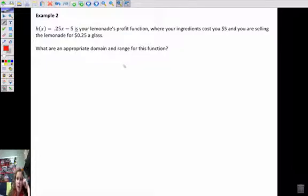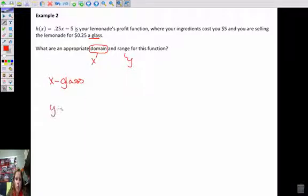Example number two, h of x equals 0.25x minus 5 is your lemonade profits function. So we're taking, I'm assuming where h of x is your profit, and then x is going to be each glass. You make 25 cents per glass, you have a $5 cost for a startup. What is an appropriate domain and range? So domain is the x values, and range is the y values. So we have to think about what is an appropriate amount of glasses to sell, since our x is the glasses. And what is an appropriate amount of money to get? So y is the profit.